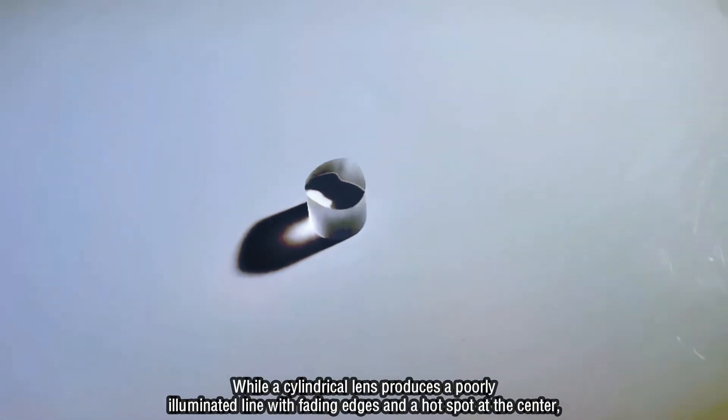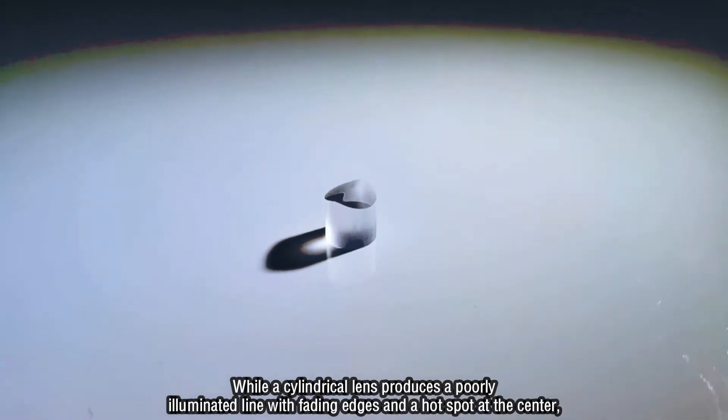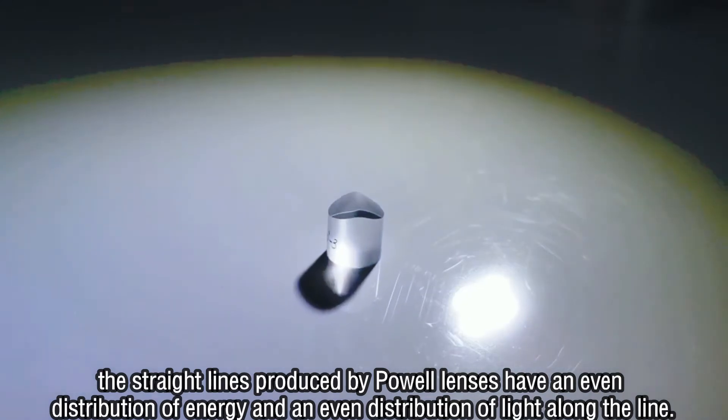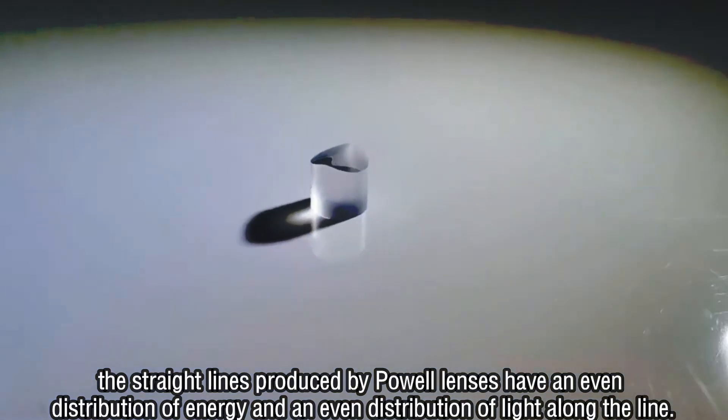While a cylindrical lens produces a poorly illuminated line with fading edges and a hot spot at the center, the straight lines produced by Powell lenses have an even distribution of energy and an even distribution of light along the line.